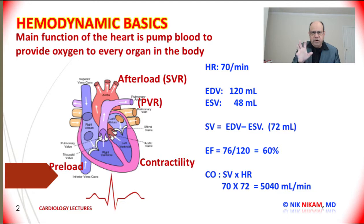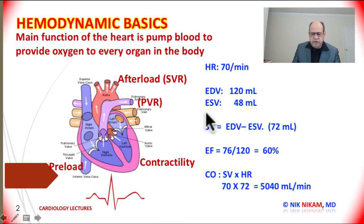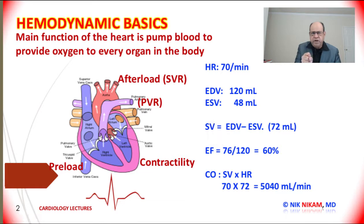That is the number of times the heart is squeezing per minute. Now we have the end diastolic volume. When we talk about end diastolic volume, we are primarily referring to the end diastolic volume of the left ventricle — that is the amount of blood which fills the ventricle just before the ventricle begins to contract. The ventricle does not squeeze every drop of blood it receives; it only pumps a certain percentage of the blood at the end diastolic phase. From these two numbers we can derive the stroke volume, that is the amount of blood pumped into the aorta with each heartbeat.